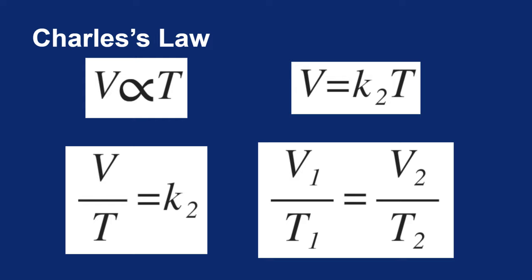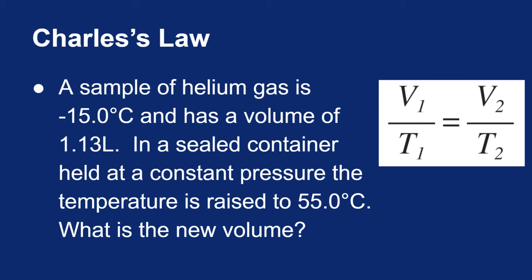Let's give it a try. I've got some helium gas, and I measure that temperature to be negative 15 degrees Celsius. And at that temperature, it has a volume of 1.13 liters. I have a sealed container, so I'm keeping the amount of gas constant. And I'm holding it at constant pressure. So those are the two conditions that must be met in order to utilize Charles' law.